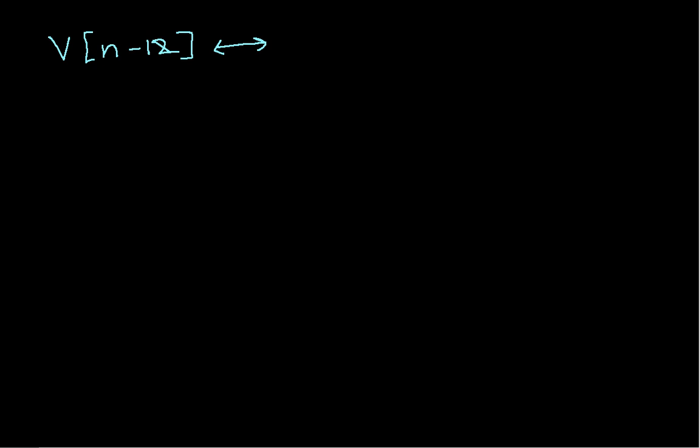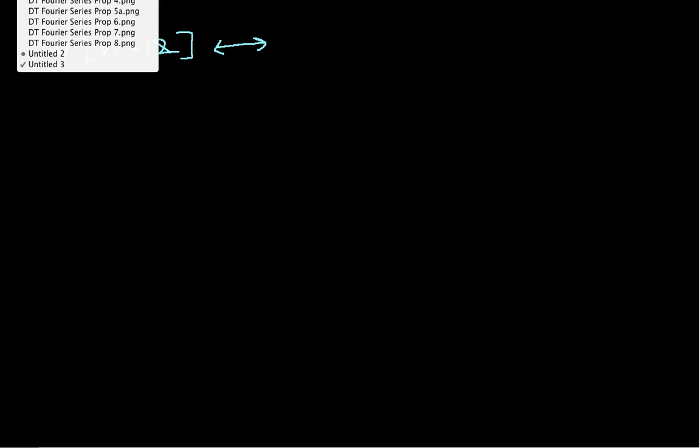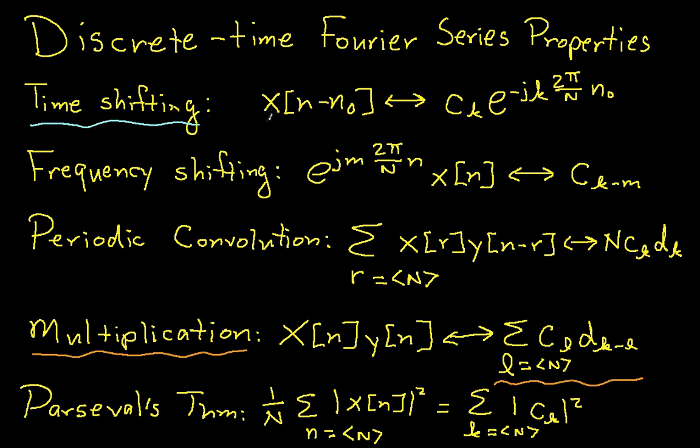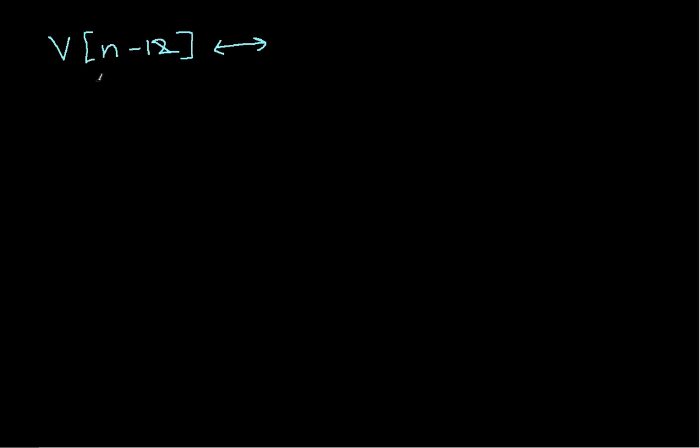So let's see, time shifting is here. So if I take X and shift it to the right by some number N0, then I will have the Fourier series coefficients of X times this complex exponential. So in our situation, we have V shifted to the right by 12. So V has Fourier series coefficients that I've called D sub K. And now we'll have this times E to the minus J, K 2 pi over 24 times the time shift, which is 12.